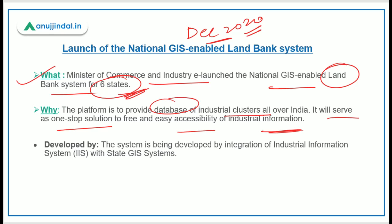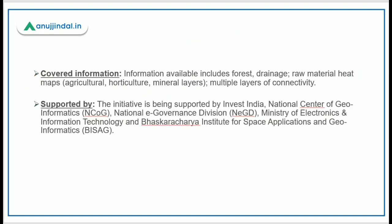This system is developed by the integration of the Industrial Information System with the state GIS system, and this system is developed by the Ministry of Commerce and Industry. It should include many layers of information such as forest-related information, drainage, raw materials, and heat maps like agriculture.